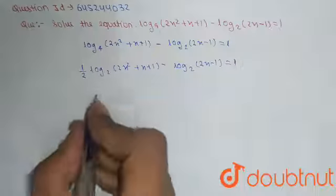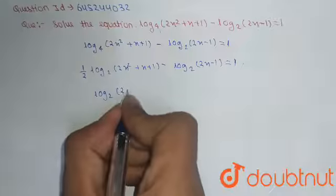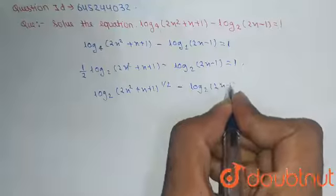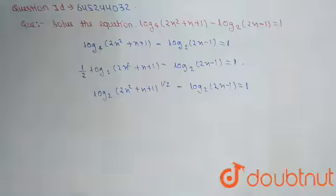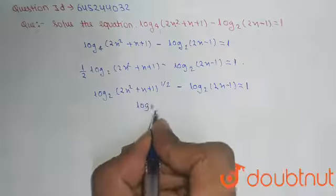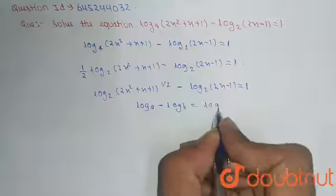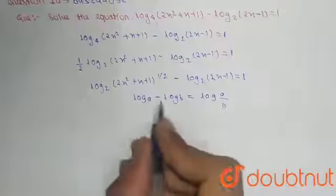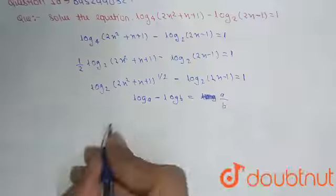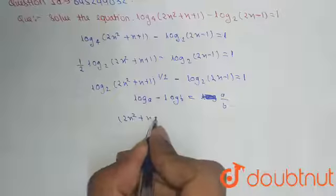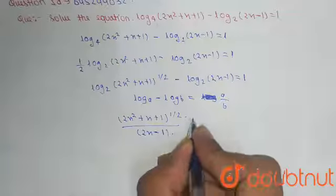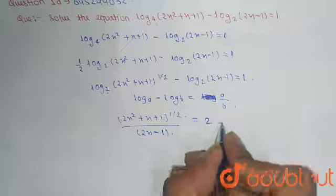With the property of log, we can write this as log base 2 of (2x² + x + 1)^(1/2) minus log base 2 of (2x - 1) equals 1. Using log A minus log B equals log(A/B), we get log base 2 of [(2x² + x + 1)^(1/2) divided by (2x - 1)] equals 1, so the expression inside equals 2.